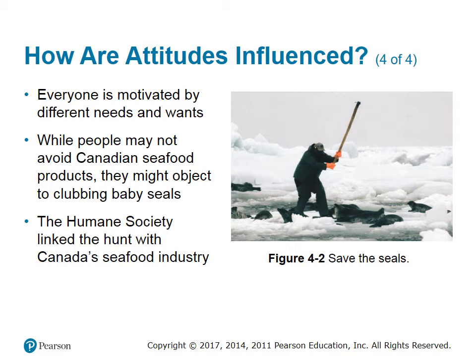Everyone is motivated by different needs and wants. For example, while people may not avoid Canadian seafood products, they might object to clubbing baby seals. The Humane Society linked the seal hunt with Canada's seafood industry. In trying to pressure Canada to stop the seal hunt, the Humane Society of the US attempted to sway the undecided to take action and influence others within an acceptable range.